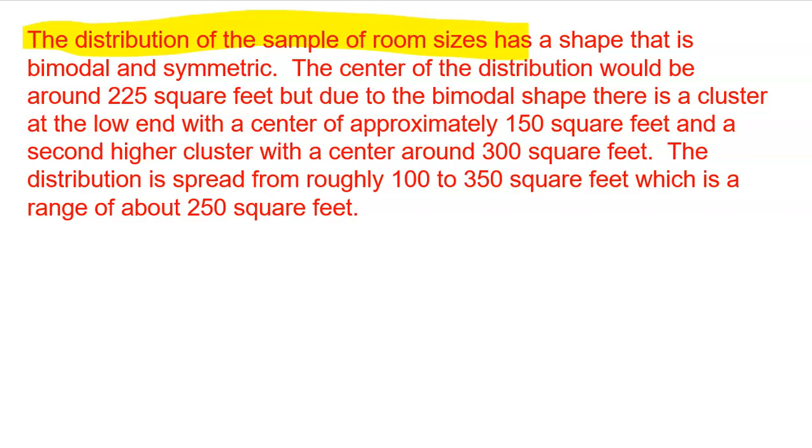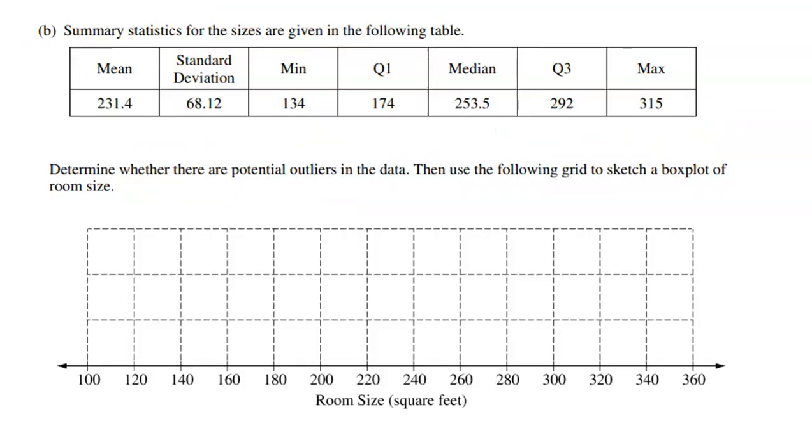So here I'm saying the shape is bimodal and symmetric. Next comes the center. I wrote that the center of the distribution is around 225 square feet. But due to the bimodal shape, there's a cluster at the low end with a center of 150, and a cluster at the high end with a center of around 300, again, just rough approximations there, nothing too exact. And then the distribution is spread roughly from 100 to 350, which gives it that range of about 250 square feet. Pretty simple explanation there. Just make sure you're writing full, complete sentences, nice and neat.